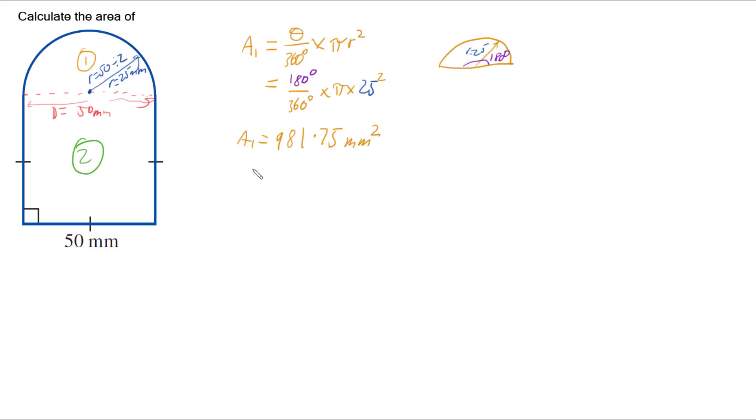Then I can work out area 2. Now area 2 is this square, because all sides are the same, of 50mm. The rule for the area of a square is side squared. So we have 50 squared, and so this area is 2500 mm squared.